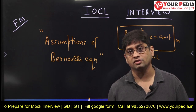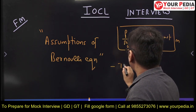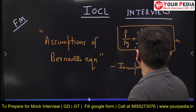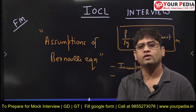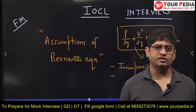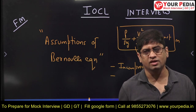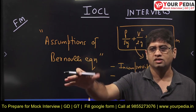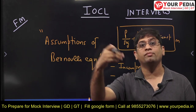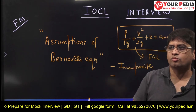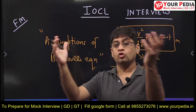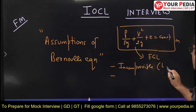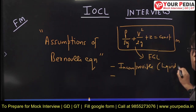Now, the assumptions: first, the fluid should be incompressible because density is assumed to be constant. So the Bernoulli equation is used on liquid, not gas, because liquids are incompressible — they have a very high bulk modulus. Since compressibility equals 1/bulk modulus, a high bulk modulus means very low compressibility, almost zero.